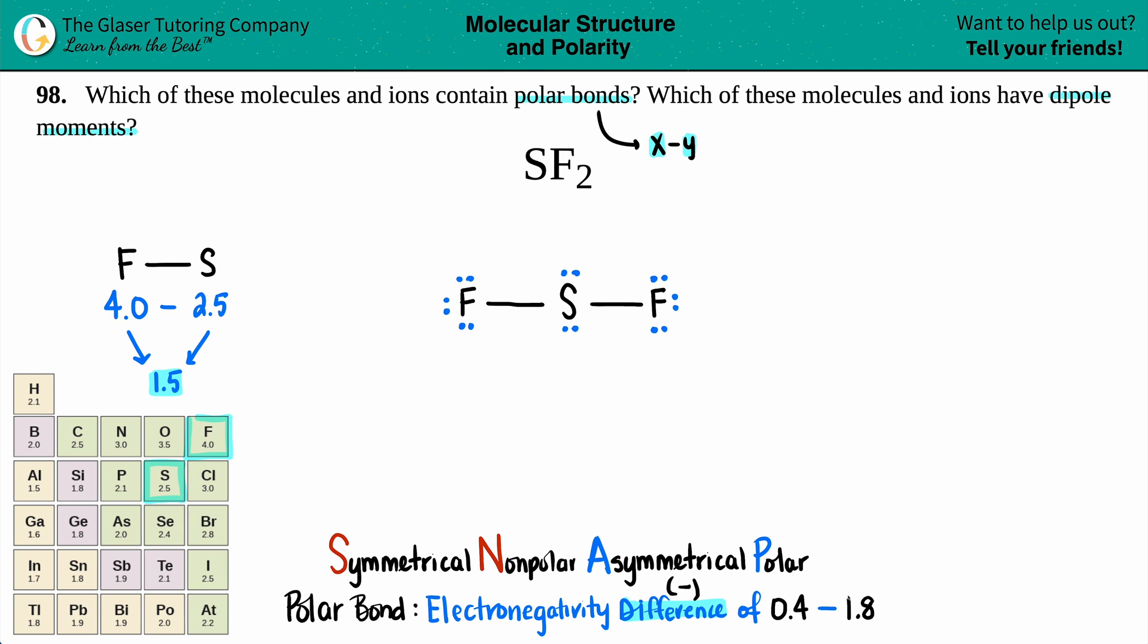And 1.5 falls way polar. The bound is up until 1.8. So we know that we have a polar bond here. And that means that the electrons in this bond are way more closer to fluorine because it's more electronegative. All right. So the first part is done.